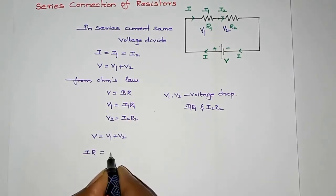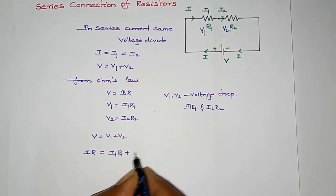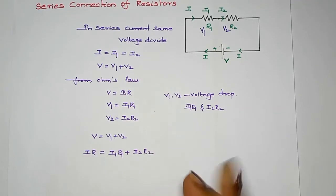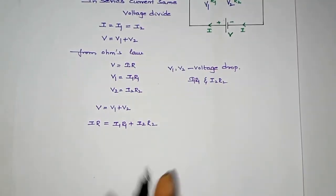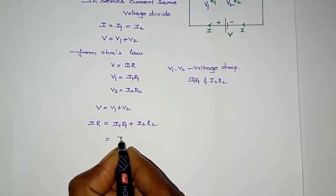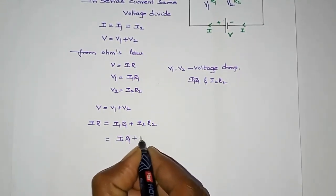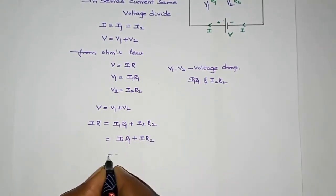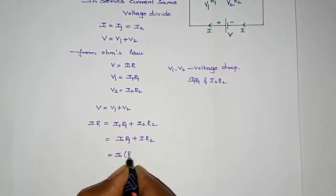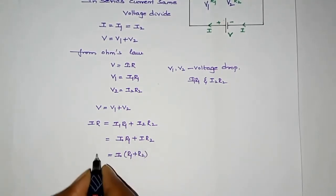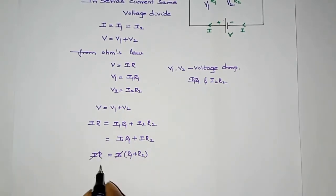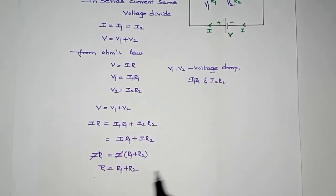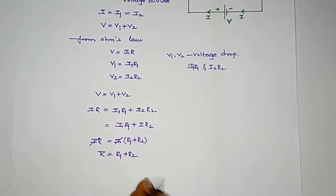V1 equals I1 times R1, V2 equals I2 times R2. In series, current is the same: I1 equals I2 equals I. So total resistance equals R1 plus R2.